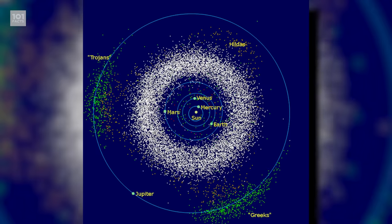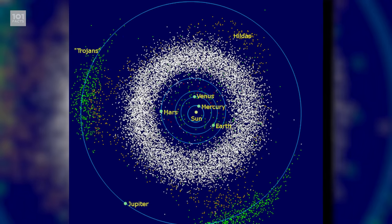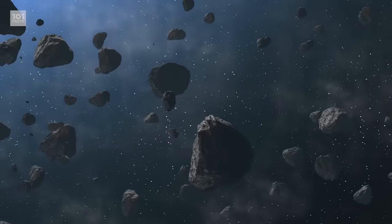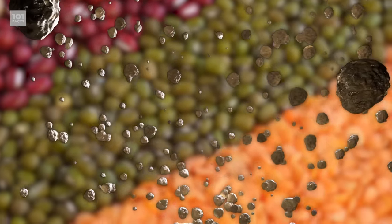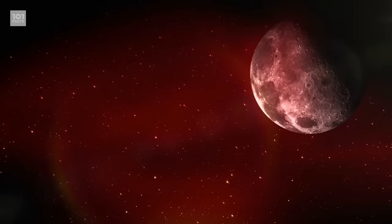The asteroid belt is roughly between the orbits of Mars and Jupiter, and has loads of remnants of the early solar system floating around there. Other bits and pieces would become comets, meteoroids, and even tiny, irregular moons.